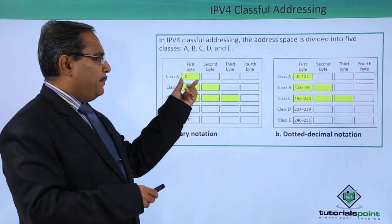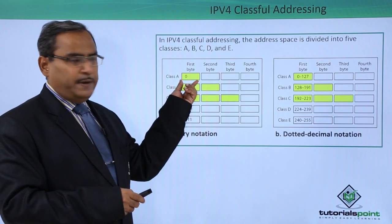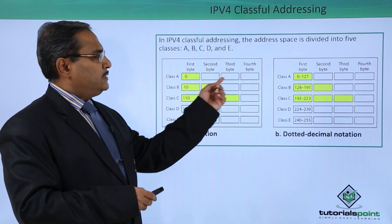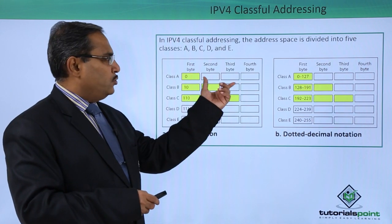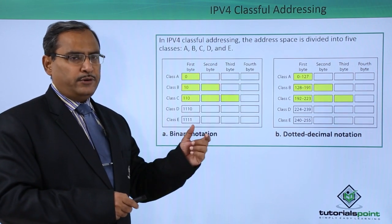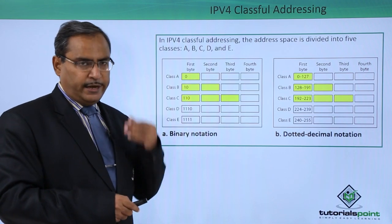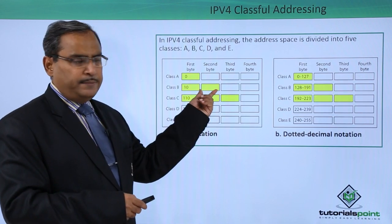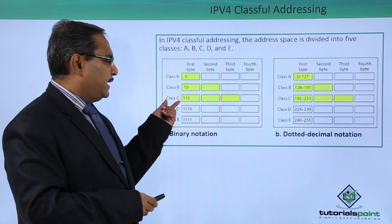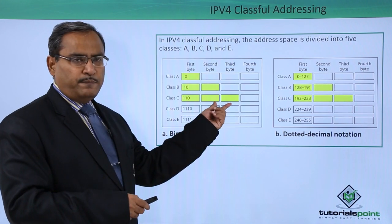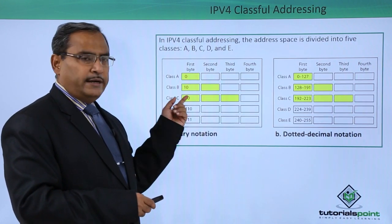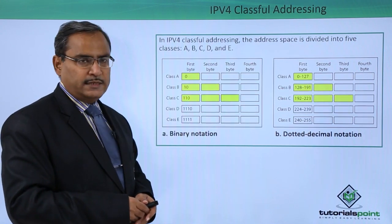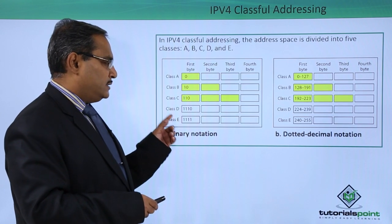In Class A, the first 8 bits (first byte) contain the net ID, and the remaining 3 bytes (24 bits) contain the host ID. Host ID means the computer ID and net ID means the network ID. In Class B, the first two bytes are for the net ID and the rest for the host ID. In Class C, 24 bits are for the net ID and the last byte for the host ID. Classes D and E are also present.